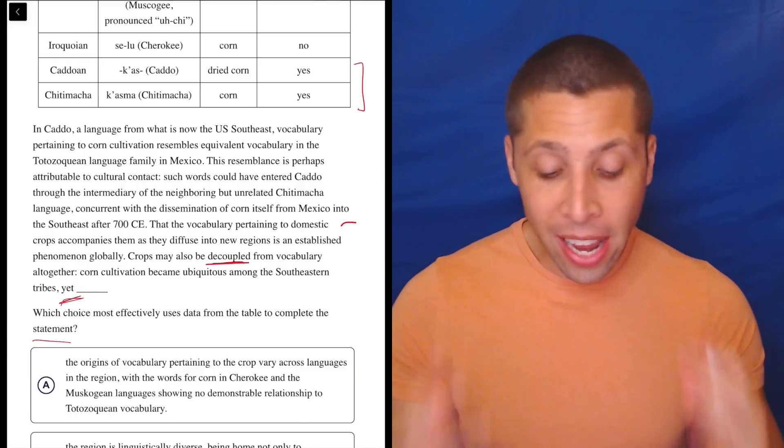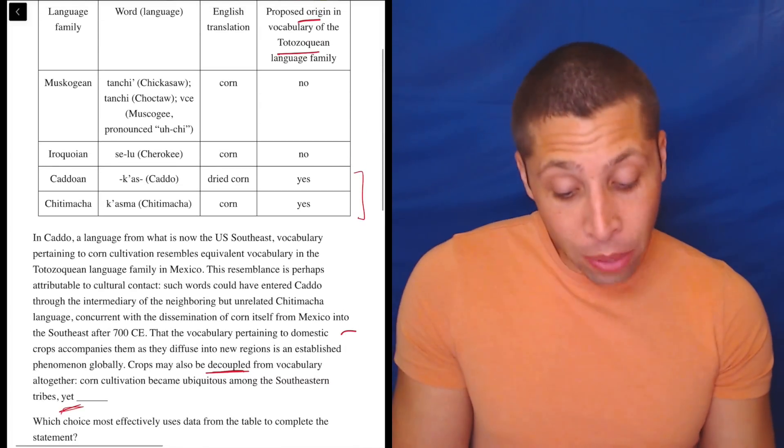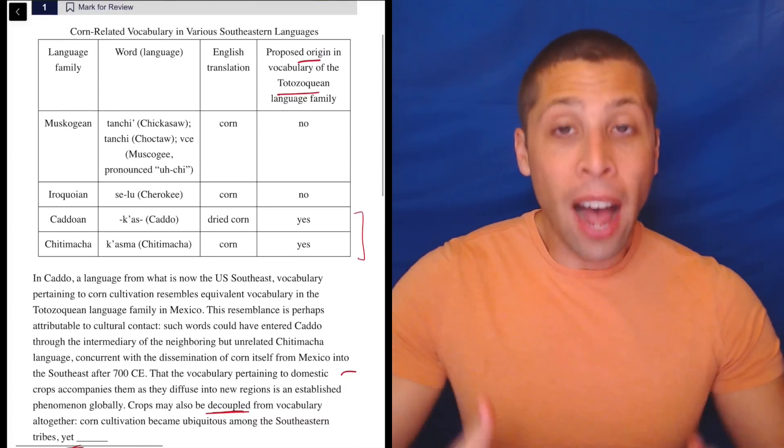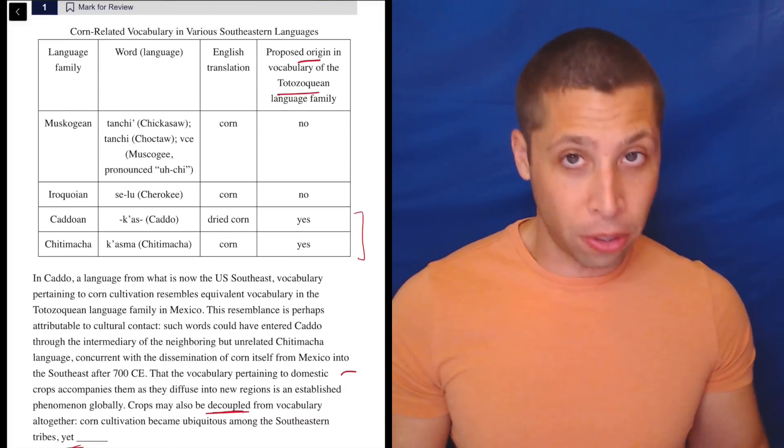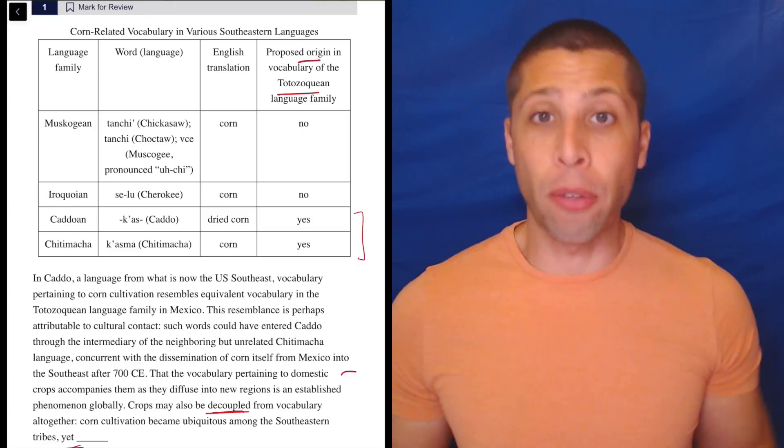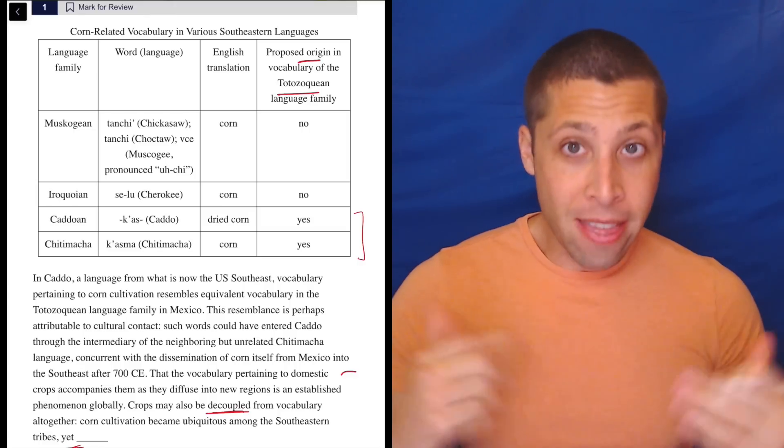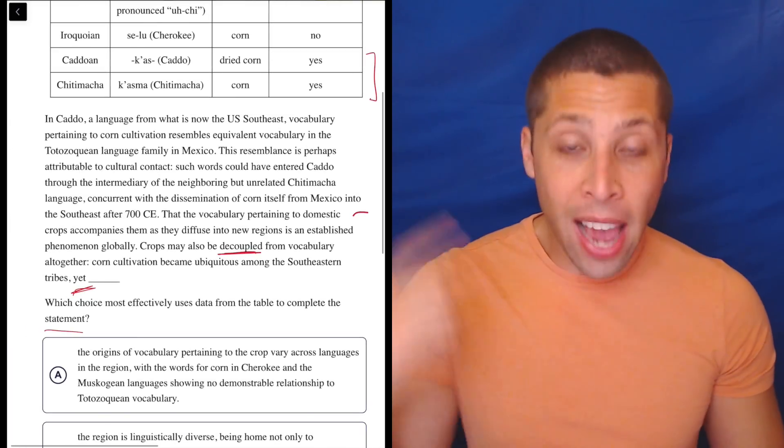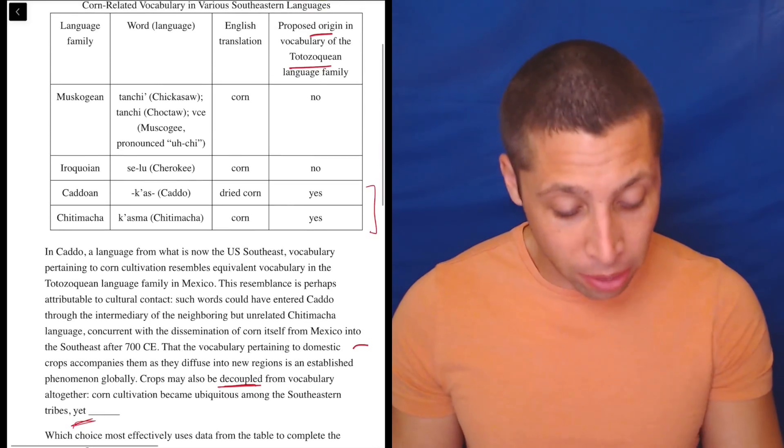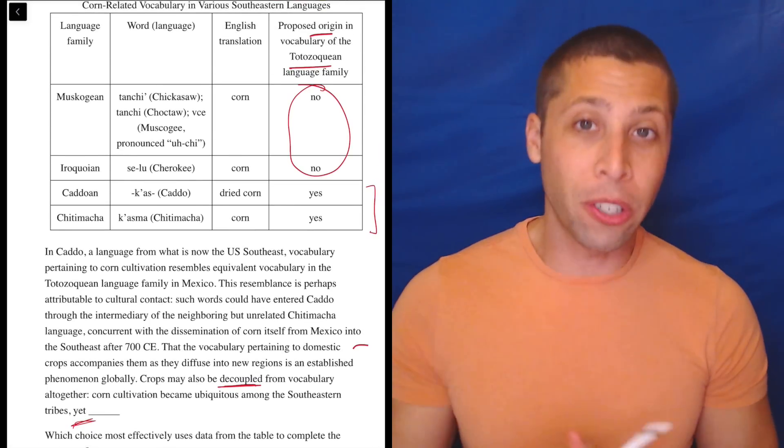So this whole passage is saying how these two languages at the bottom of the chart got their word for corn from this other language that's represented by the right column in the chart. And then there's a contrast. Yet, there's some differences, right?